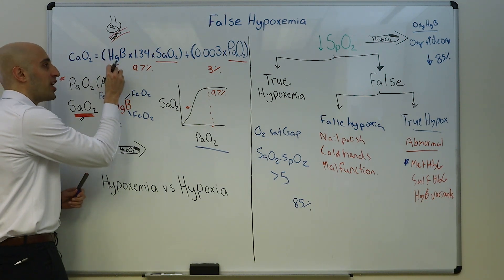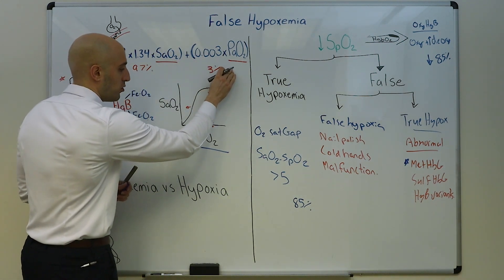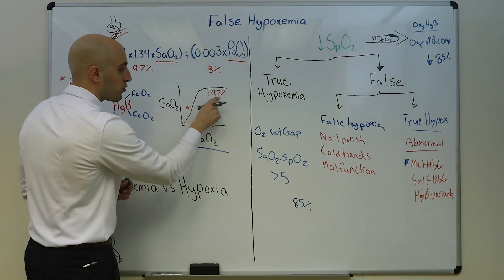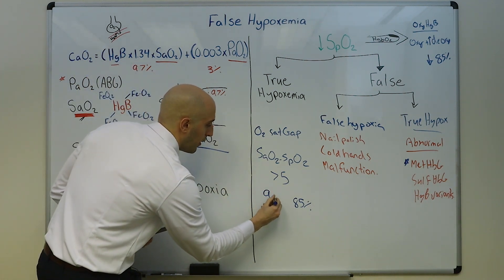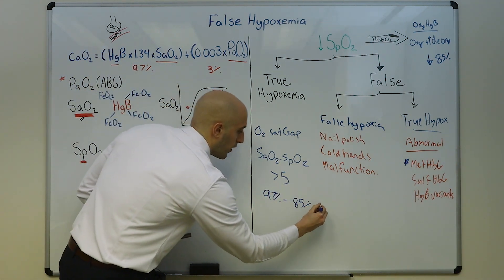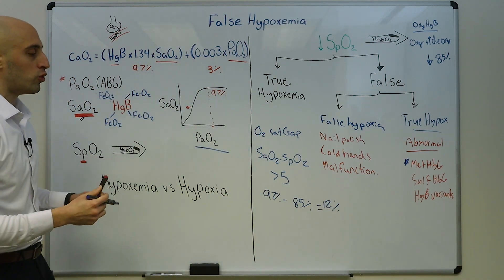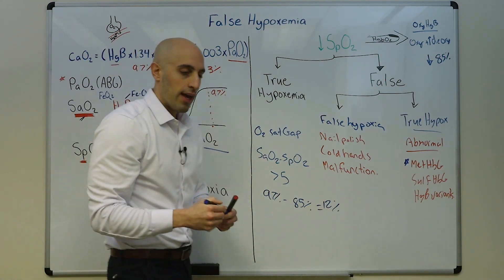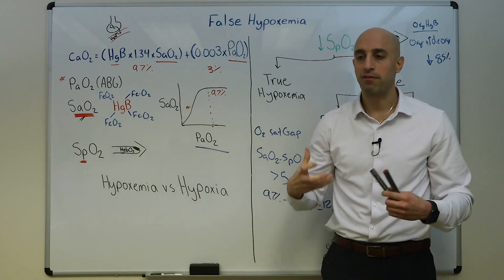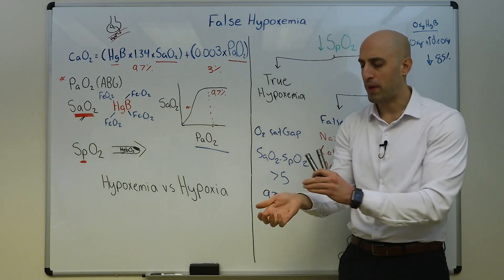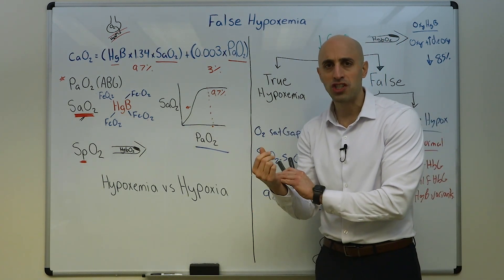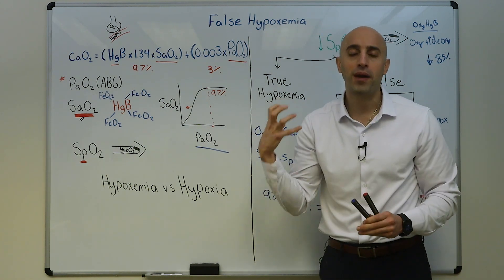The SaO2 on the ABG is determined by the PaO2. In methemoglobin, we already said that the quantity or the shape of hemoglobin doesn't affect PaO2, so the SaO2 is normal, 97 percent. 97 percent minus 85 equals 12 percent, so this gap is a clue to an abnormal hemoglobin.